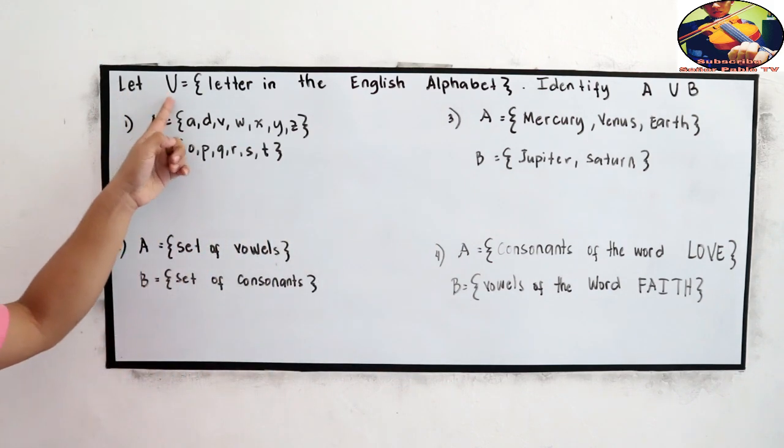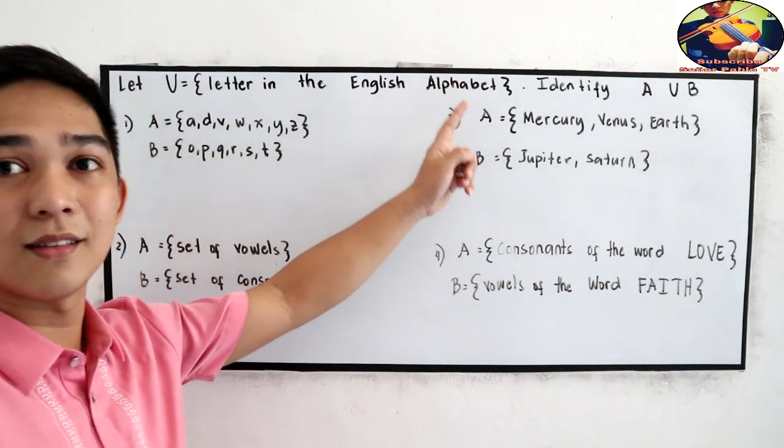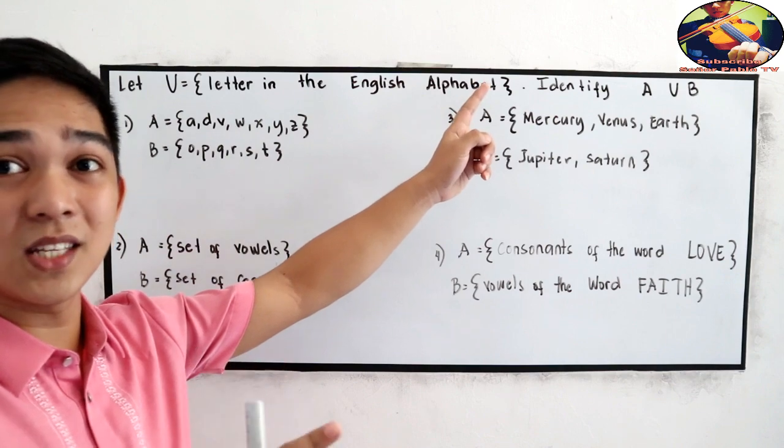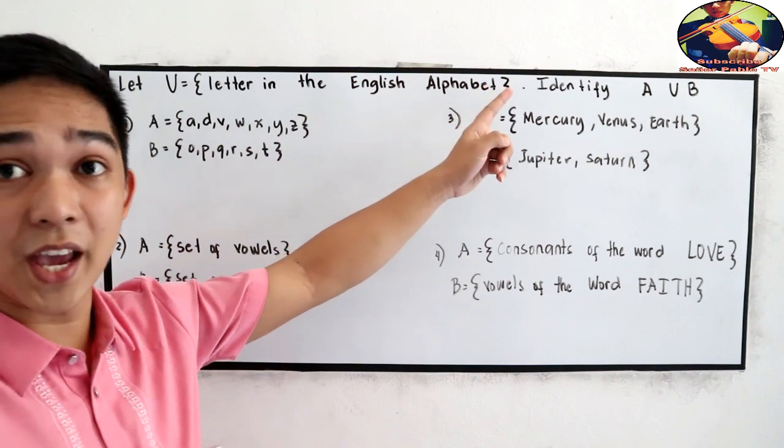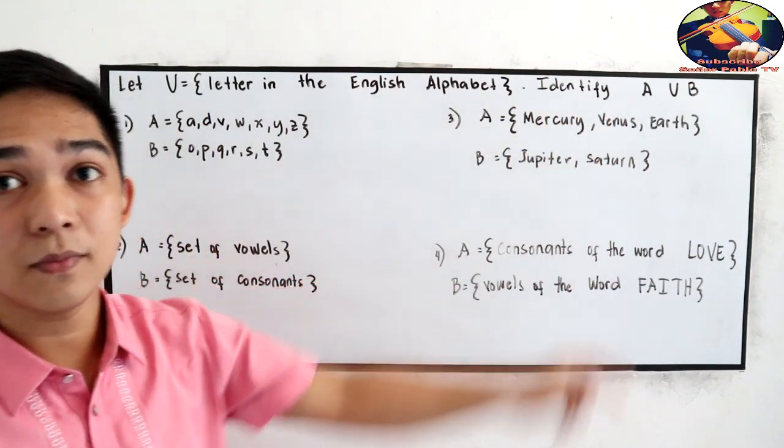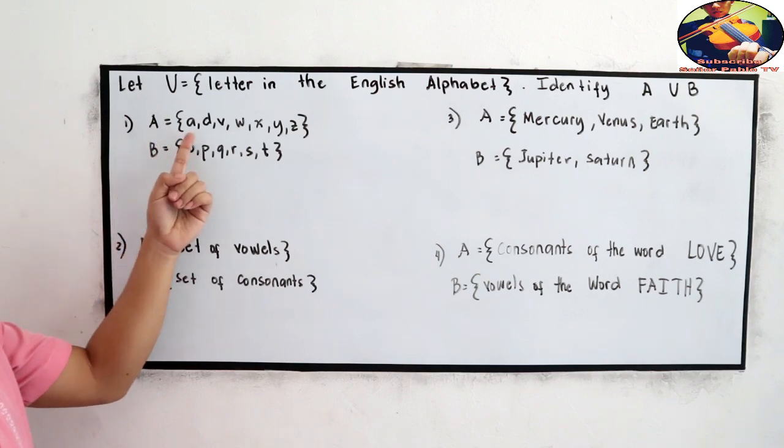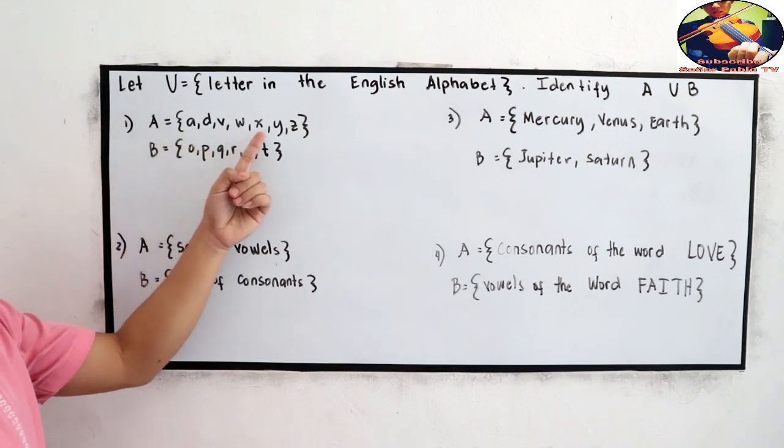For those who watched the video, I want you to answer numbers 1, 2, 3, 4. Let the universal set, or U, be the letters in the English alphabet. That's A, B, C, D, until letter Z. Identify A union B. For number 1, set A is equal to A, D, V, W, X, Y, Z.